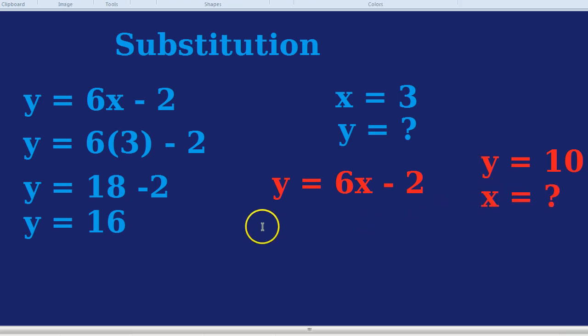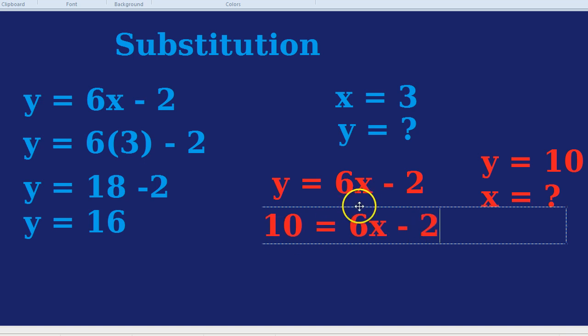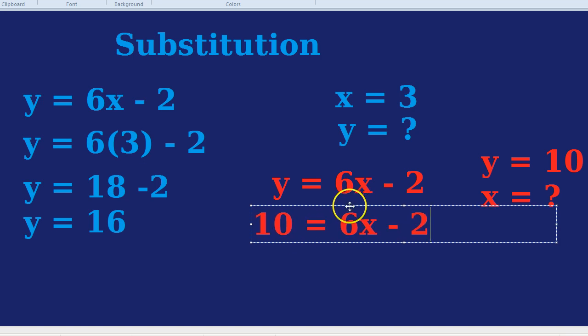Same trick as before, we bring this time the coach off the field. So we take off the y, and we replace him with a 10. So 10 now equals 6x minus 2. The y is gone, and we've substituted in her place a 10.